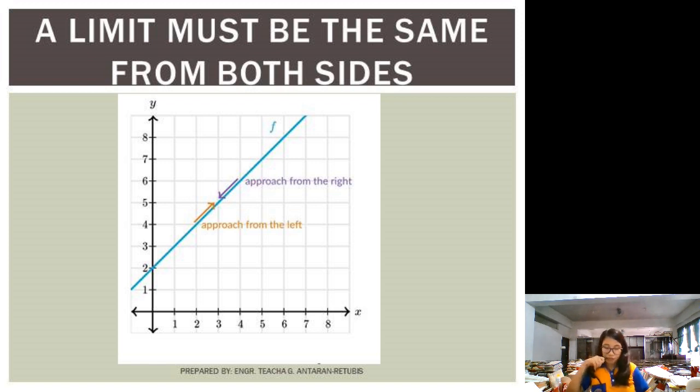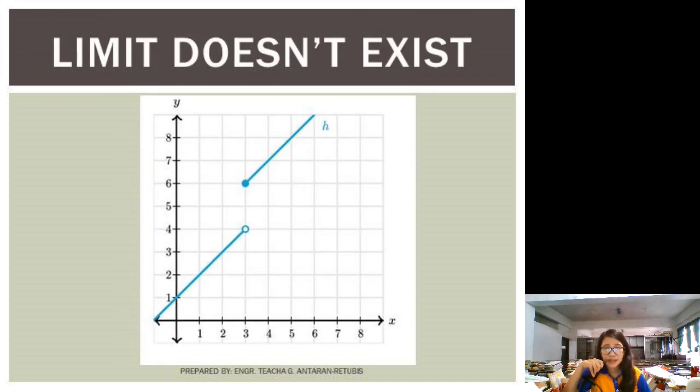the limit must be the same from both sides. Whether you take it from right, you take it from left, they should have the same. So therefore, in this case, the limit doesn't exist. Okay? So take note that when a limit doesn't approach the same value from both sides,